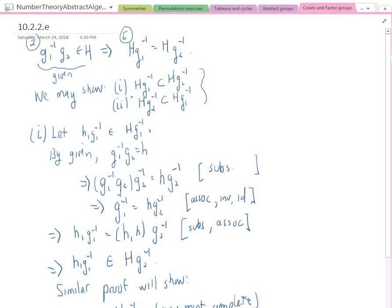All right, so let's take an arbitrary element of HG1 inverse. And the strategy is, I need to show that that's also in HG2 inverse. Okay, so here's an arbitrary element, H1 G1 inverse, which is in HG1 inverse. So we're given that G1 inverse G2 is equal to H.